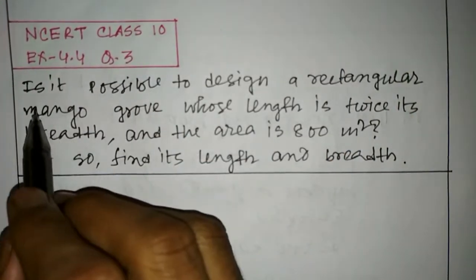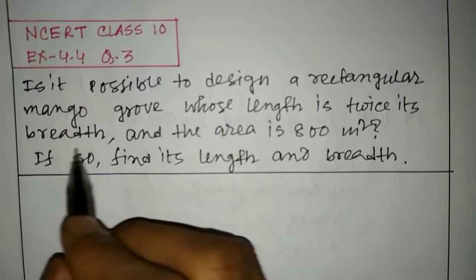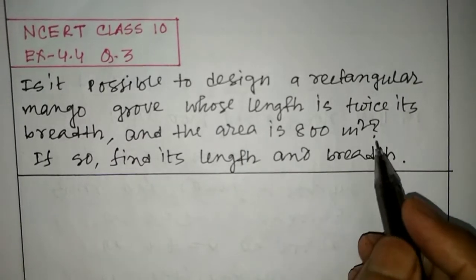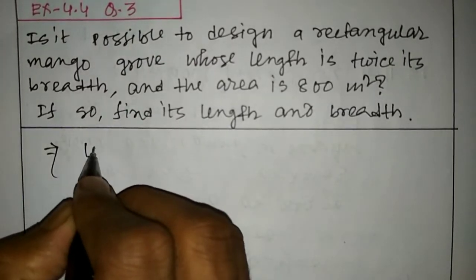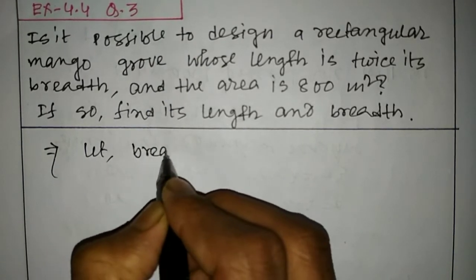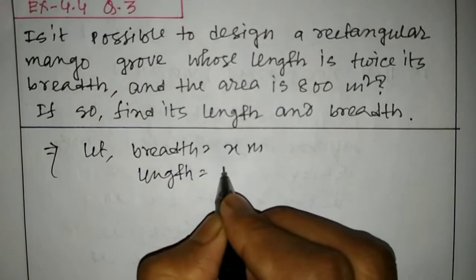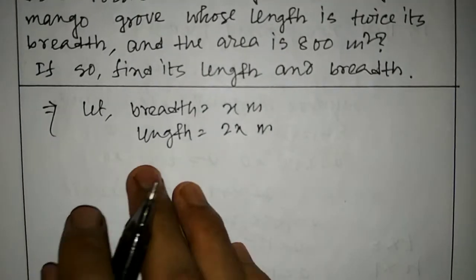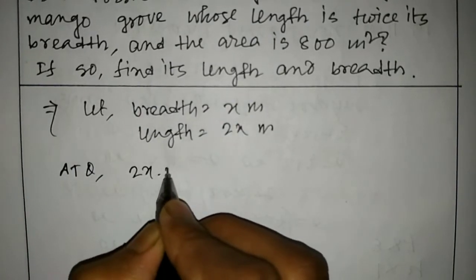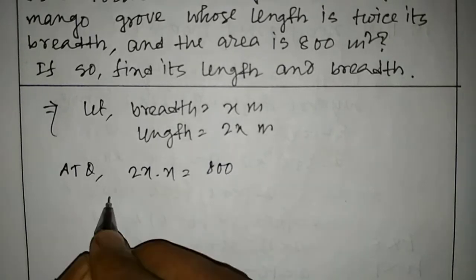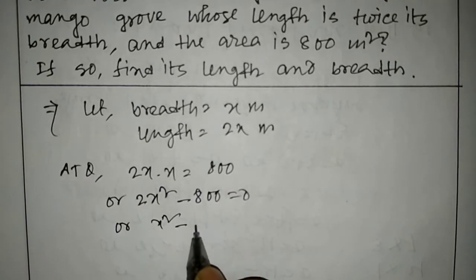This is question number 3: is it possible to design a rectangular mango grove whose length is twice its breadth and the area is 800 square meters? If so, find its length and breadth. Let breadth be x meters, so length will be 2x meters. Area of rectangle equals length times breadth, so 2x times x equals 800, giving 2x squared minus 800 equals 0, or x squared minus 400 equals 0.